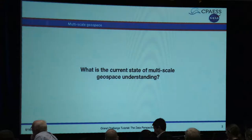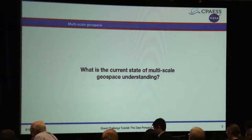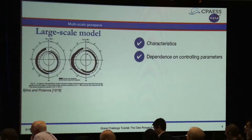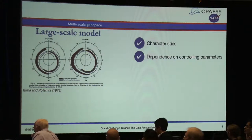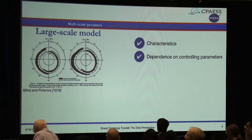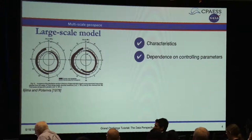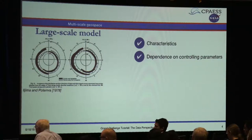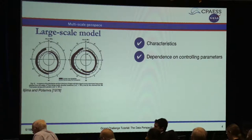To begin with the current state of multi-scale geospace understanding, I'll use field-aligned currents as an illustrative example of the relationship between large and small scales. When we think of field-aligned currents, we default to the seminal study by Iijima and Potemra in the late 70s that established the concentric region 1 and region 2 rings as the large-scale model. We've since progressed that understanding by examining dependence on controlling parameters such as solar EUV, F10.7, the interplanetary magnetic field, and solar wind conditions.